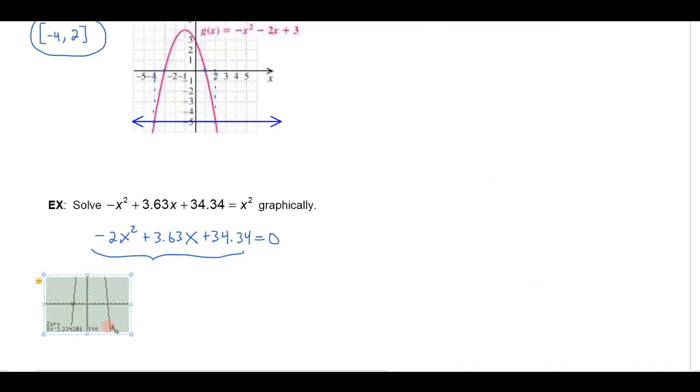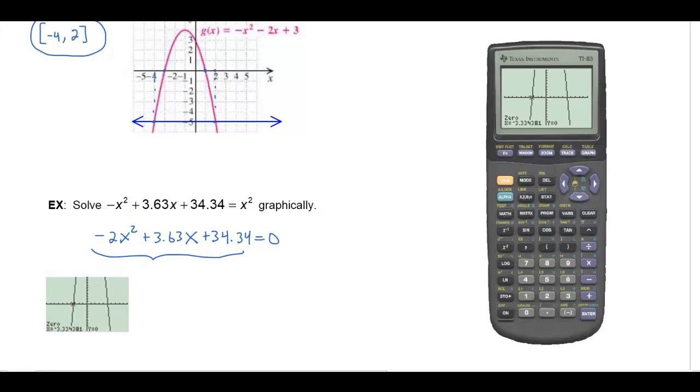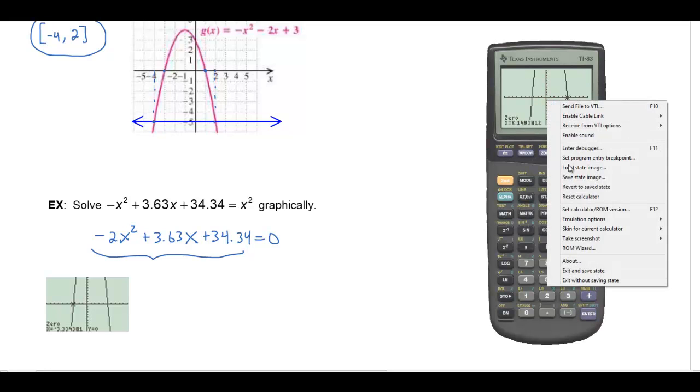And then I'll go back and also find the other zero over here. So let's calculate that one. I need to go on the left hand side of this zero. So arrow over here. I'm on the left hand side. Hit enter. Go on the right hand side. Hit enter. And then give it a guess. Get kind of close there. And it looks like that zero is about 5.14. Let's take a screenshot of that.